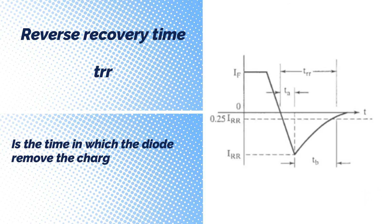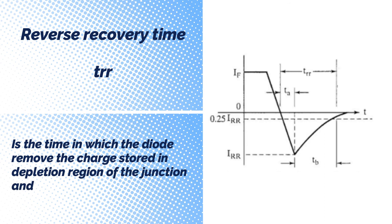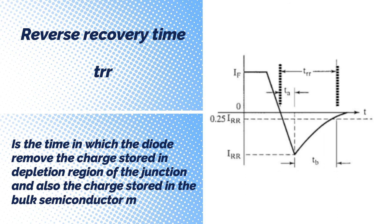Reverse Recovery Time is the time in which the diode removes the charge stored in the depletion region of the junction and also the charge stored in the bulk semiconductor material.